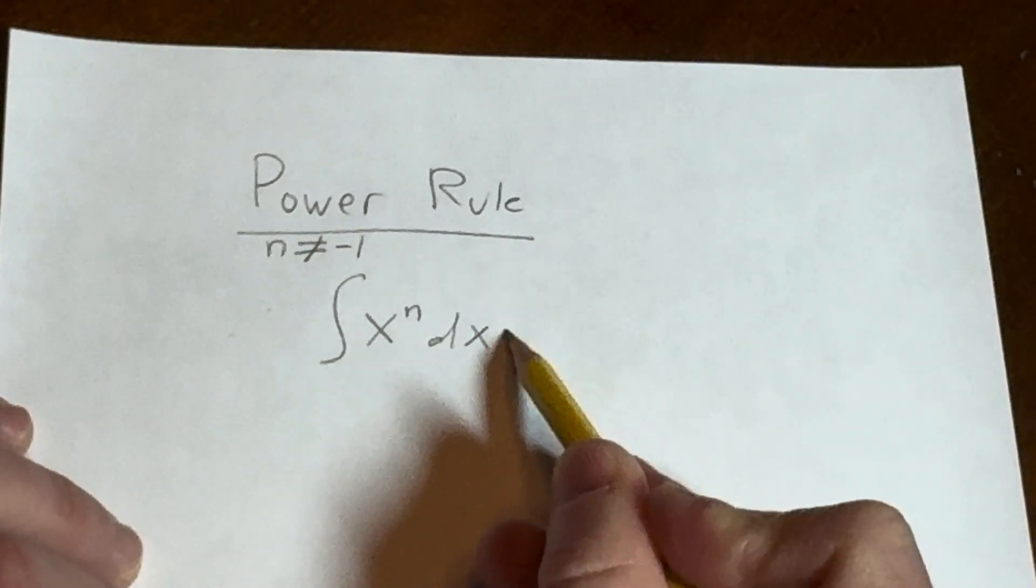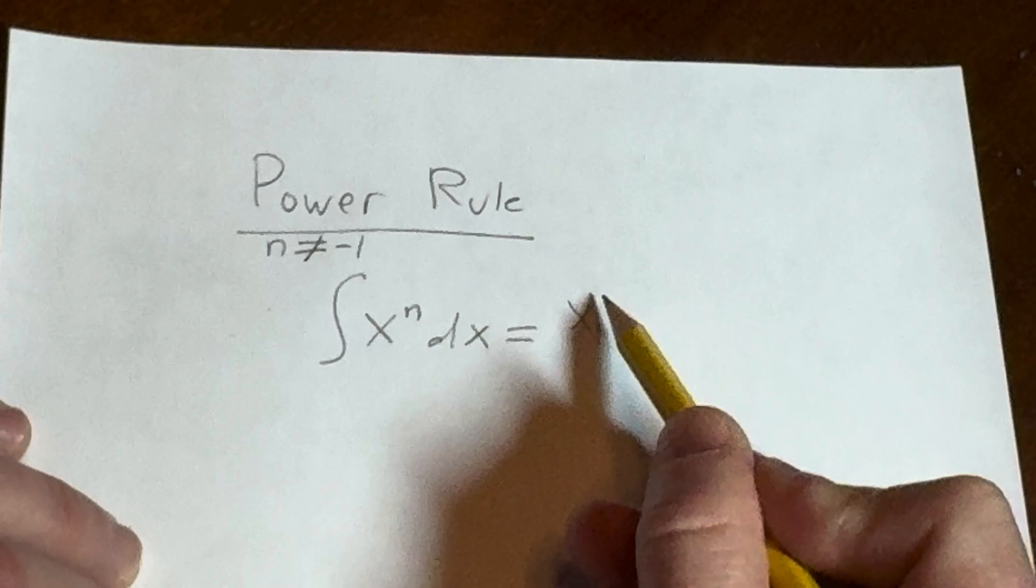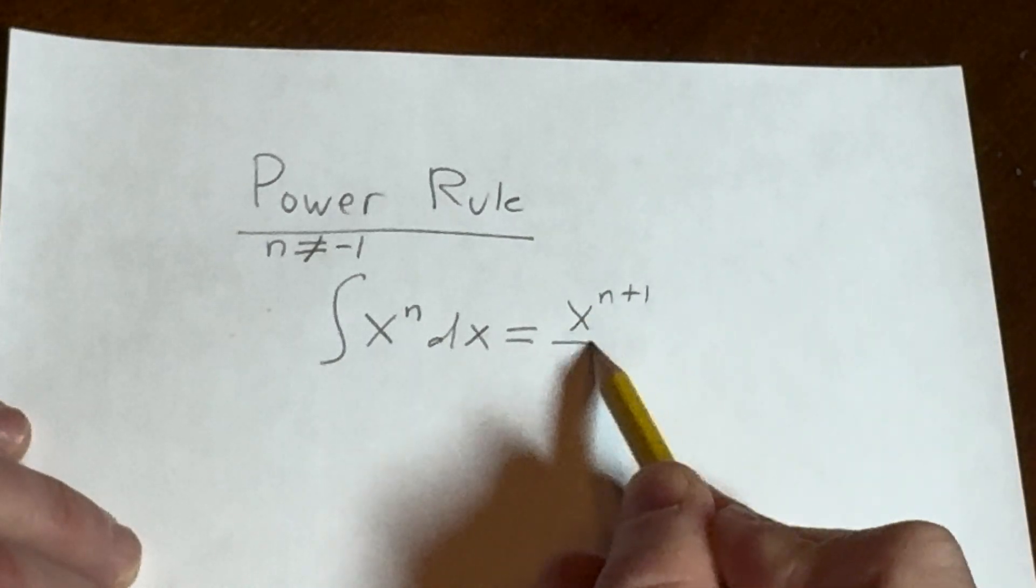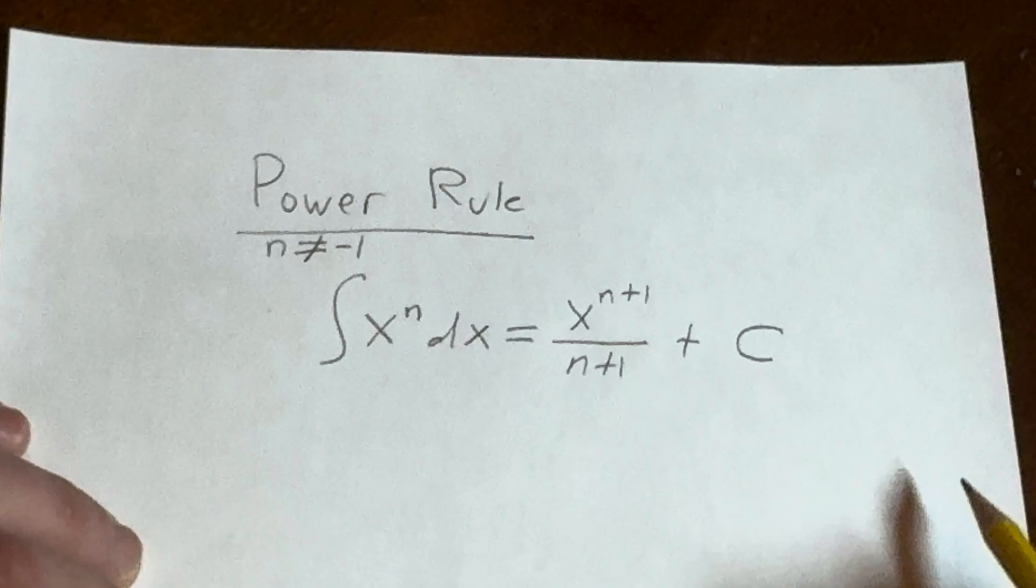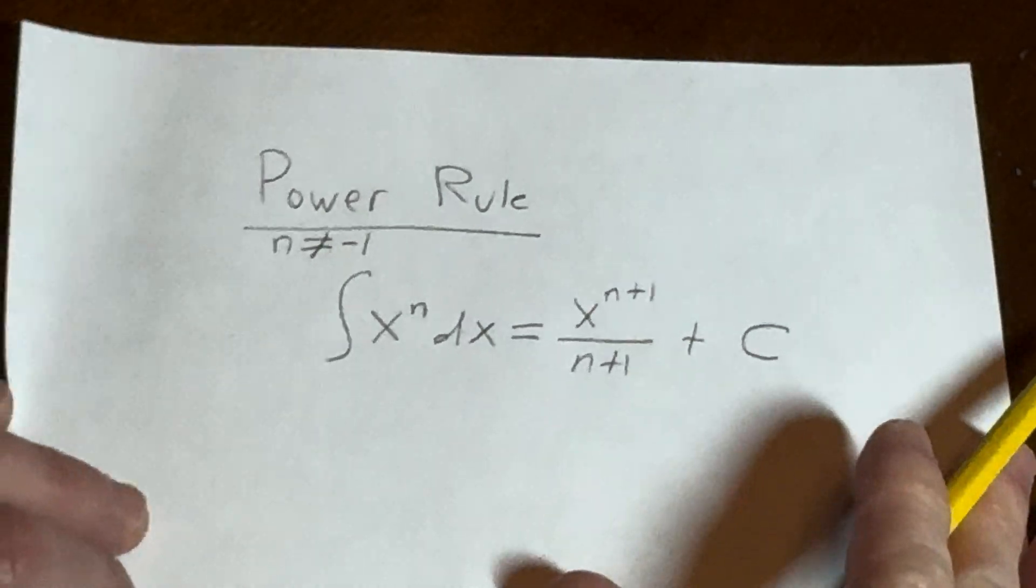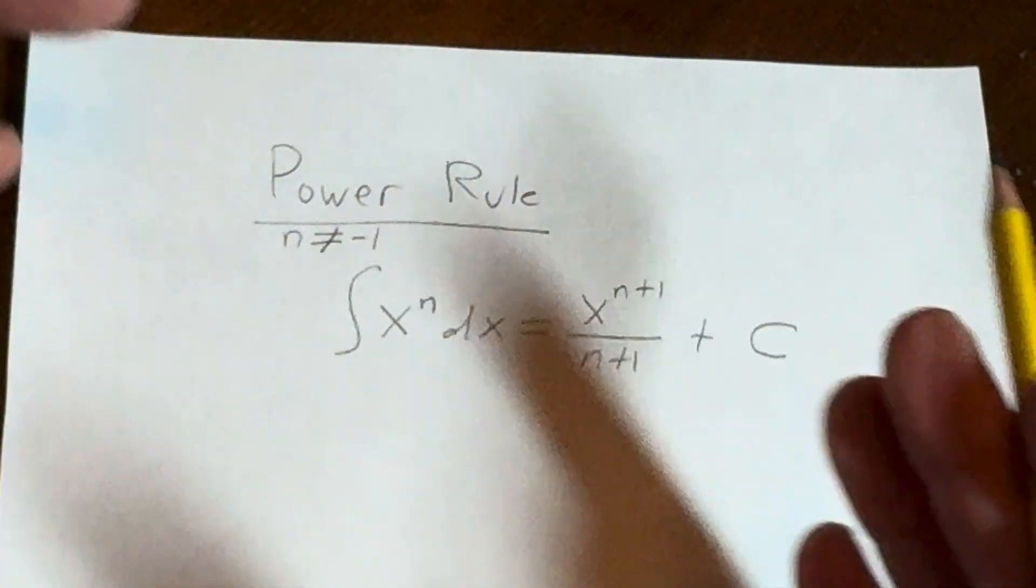So if this is the case, this is equal to x to the n plus one all divided by n plus one, plus a constant of integration capital C. This is called the power rule for integration.